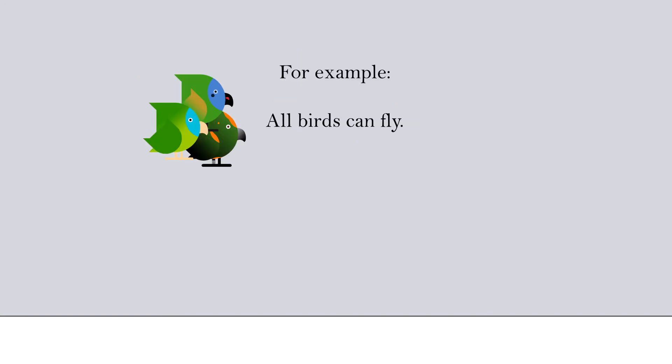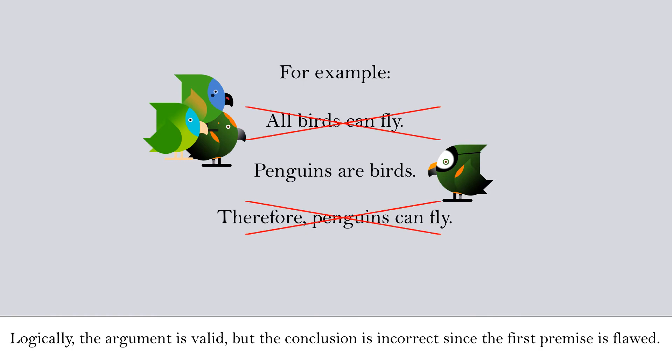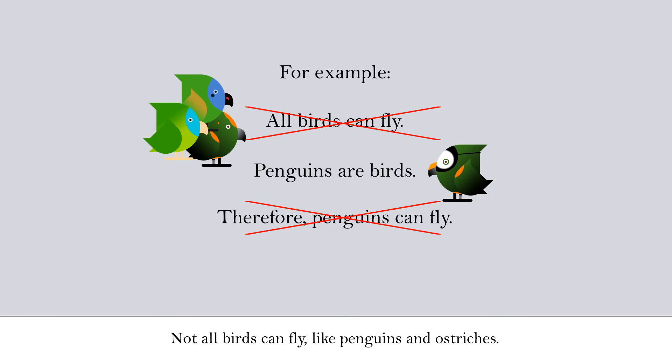For example: all birds can fly; penguins are birds; therefore, penguins can fly. Logically, the argument is valid, but the conclusion is incorrect since the first premise is flawed. Not all birds can fly, like penguins and ostriches.